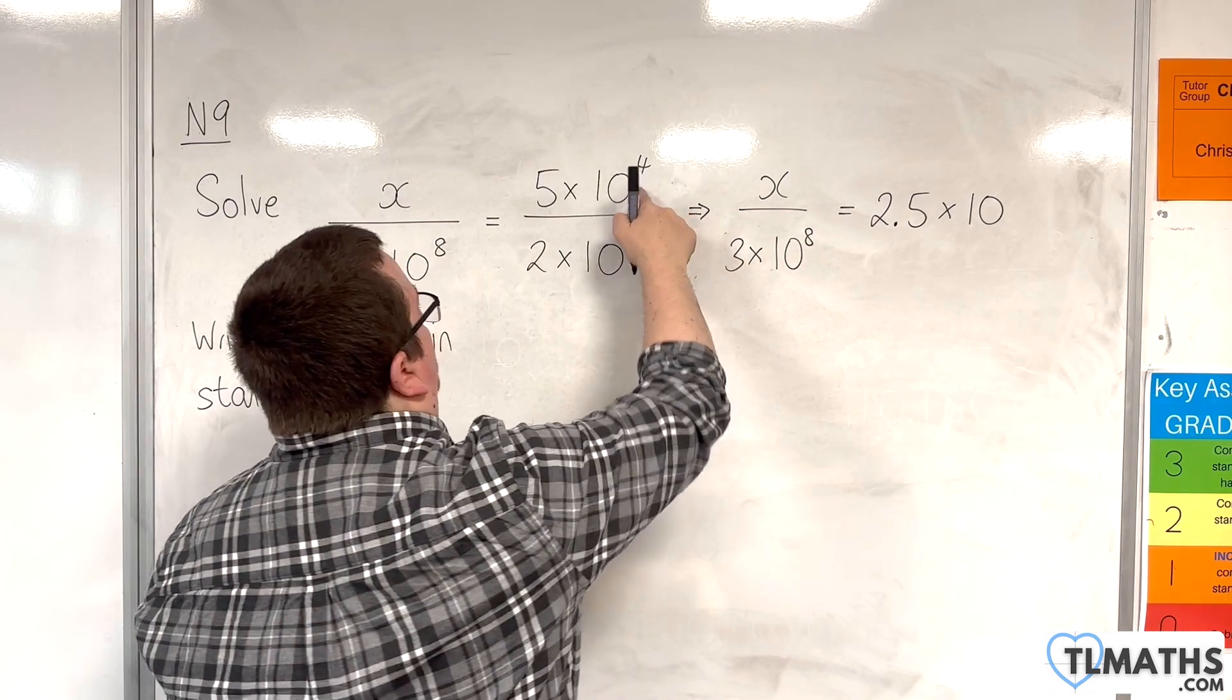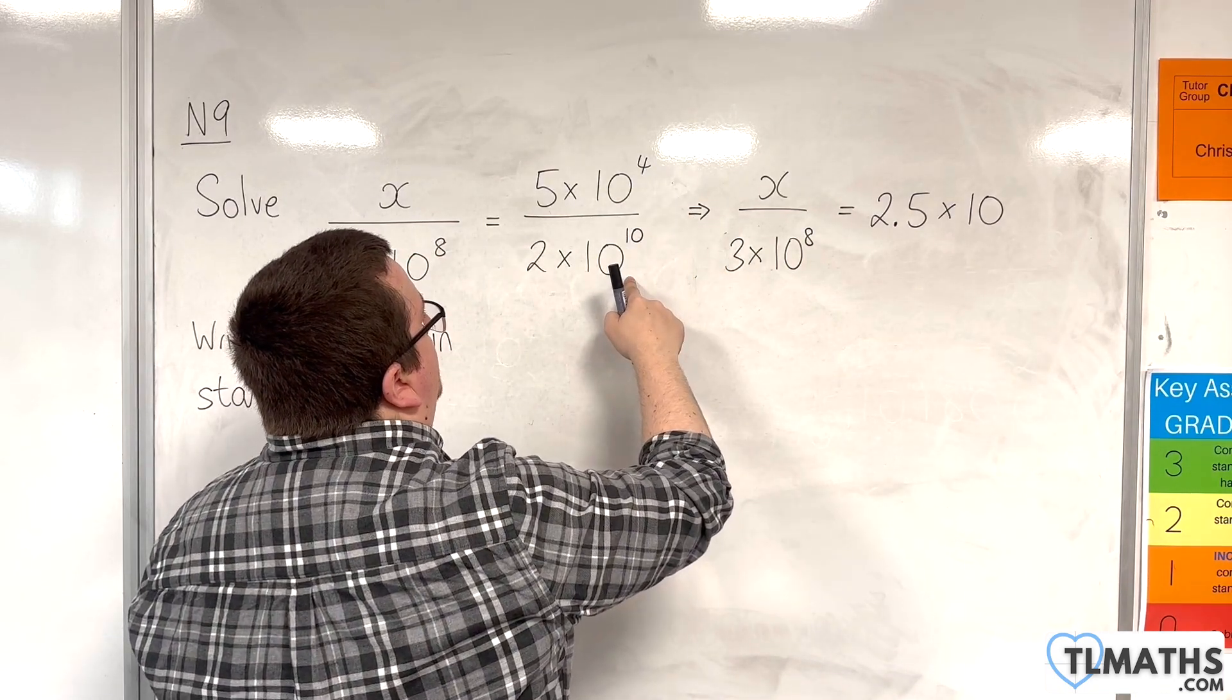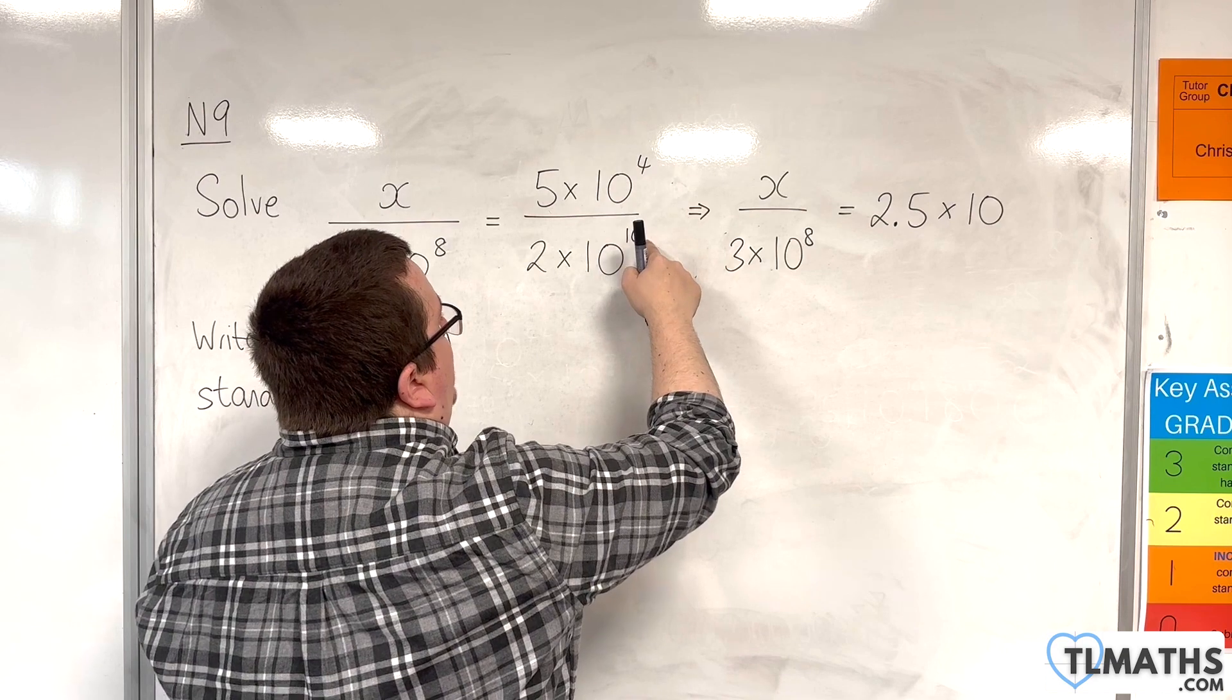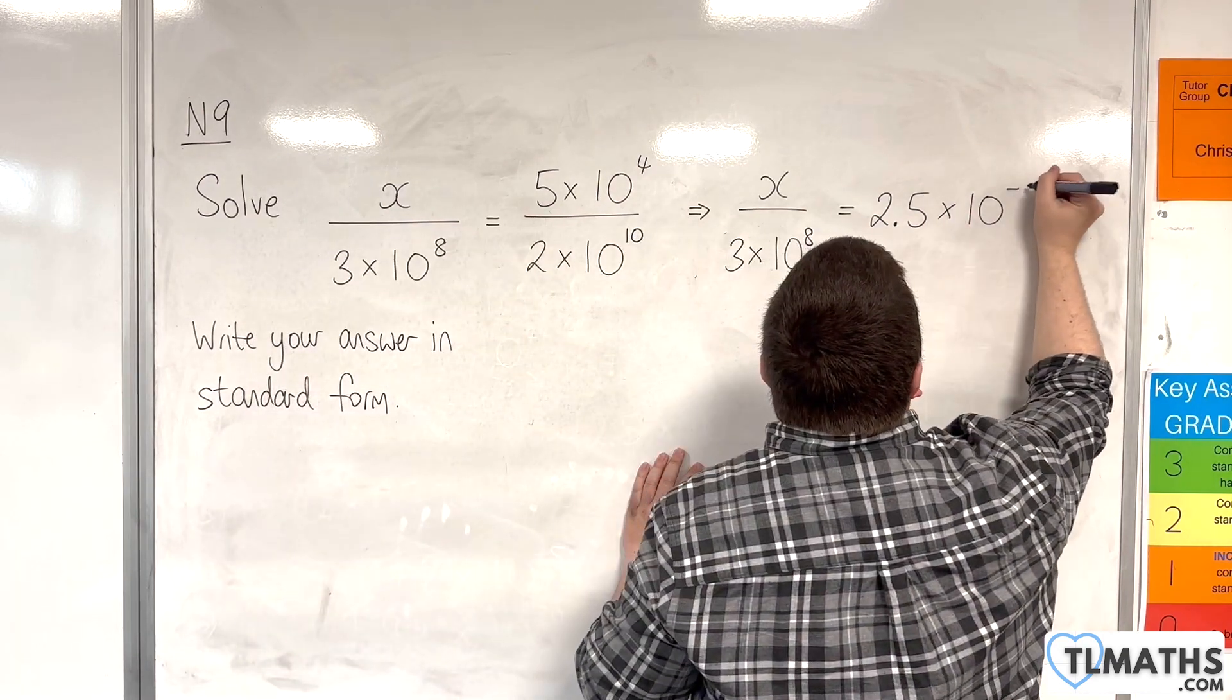And then we have 10 to the 4 divided by 10 to the 10. So that's 4 take away 10, so minus 6. So 10 to the minus 6.